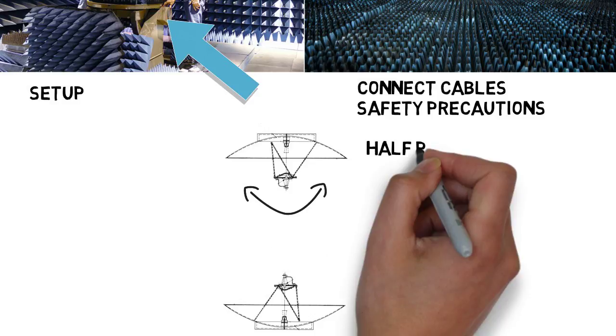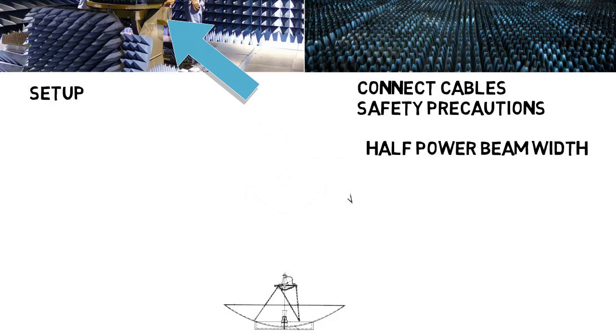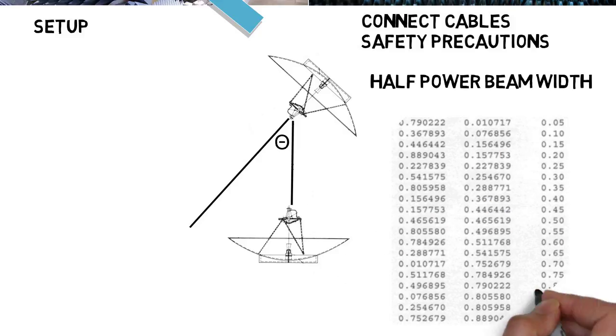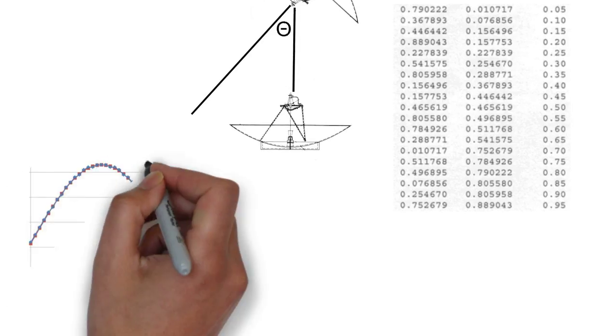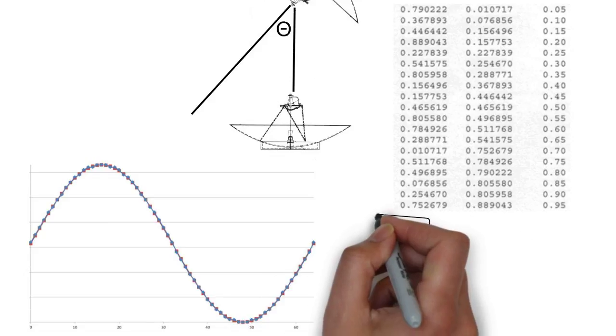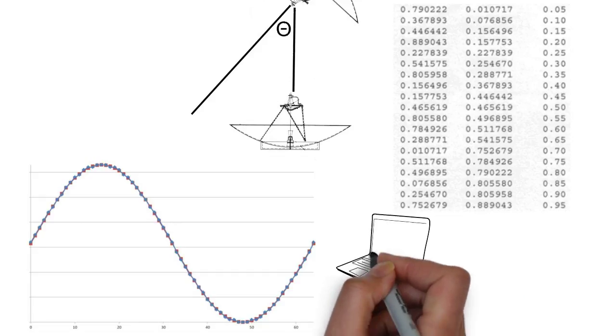We could determine things like the half power beam width, or essentially, as the transmitter turned, at what angle from its centered position would the received signal be at half power from the maximum. This was just one of the many things we had to analyze. We ran many tests which usually took a few hours of having the platform turn and take measurements, then we'd tweak something and do it again. Afterwards we'd have a lot of data in table form, giving data on angles, signal strength, and more. I had to export it to Excel and make plots so we could analyze things about the transmitter, which is another reason for so much computer time.